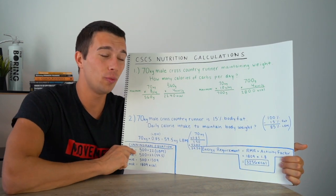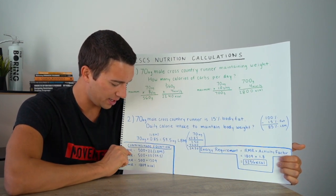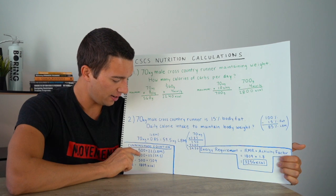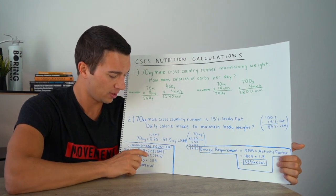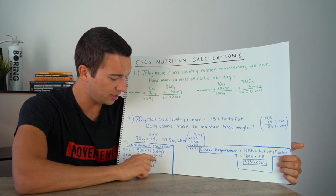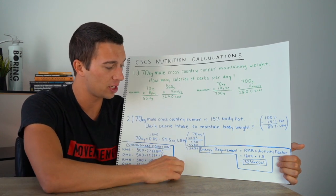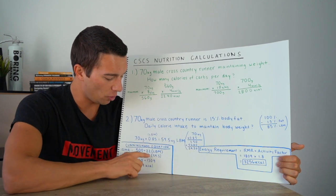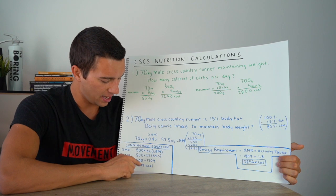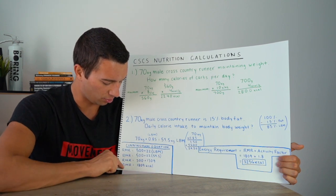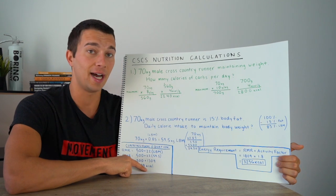So the Cunningham equation is something you will want to memorize. It's pretty basic, but it's resting metabolic rate equals 500 plus 22 times lean body mass in kilograms. So you're going to do the 22 times the 59.5. With the same math set up here, we're going to put one over top of the other and multiply in the same way. And then once you get that answer, you add it to the 500. And in this case, that's going to get us a resting metabolic rate of 1,809 calories.